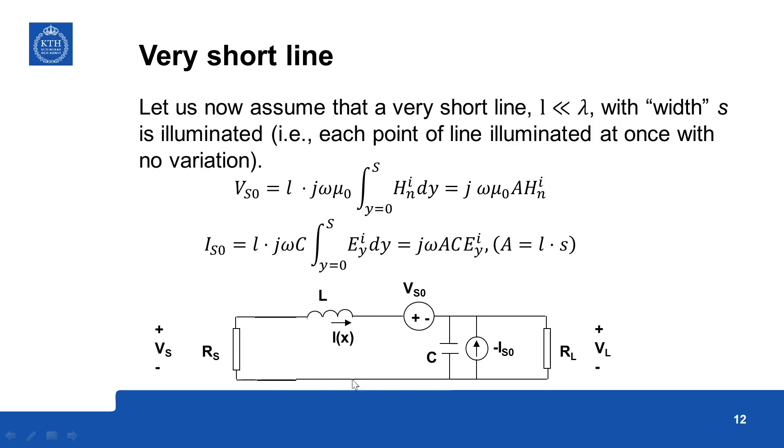So we can neglect all the variation of the field along this small transmission line in that case. So the whole width S is eliminated and there is no variation. So you can replace this integral by area A which is given by the length of the line L times the width of the line S.